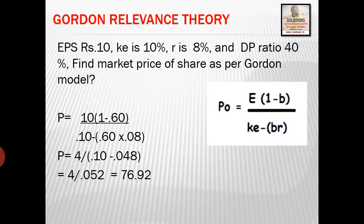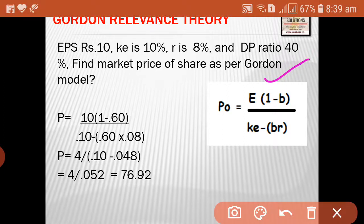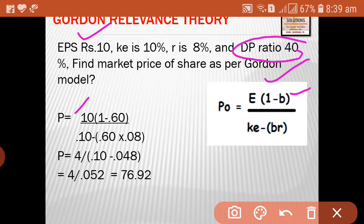First example: EPS of a company is Rs. 10, KE is 10%, rate of return is 8%, and DP ratio is 40%. Find the market price of share as per Gordon model. The equation is P0 = E(1 - B) / (KE - BR). E is Rs. 10. The DP ratio is 40%, so the retention ratio B will be 60%.